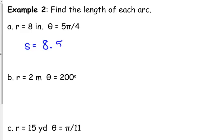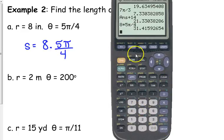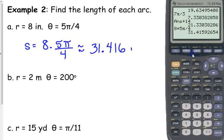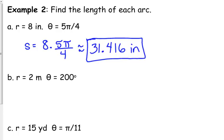S equals 8 times 5 pi over 4. And, we're just going to add that to our calculator and crunch the numbers. 8 times 5 pi over 4. So, the length of this arc is approximately 31.416. And, we need to include units. Be in the habit of including units. That is inches.